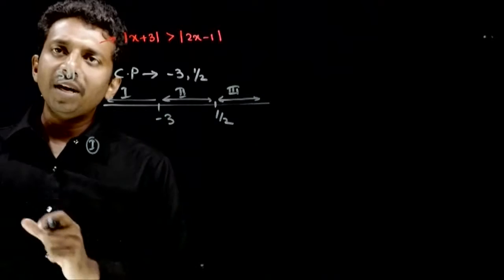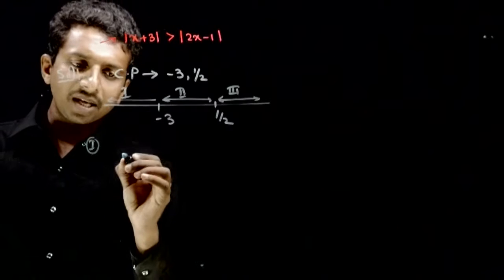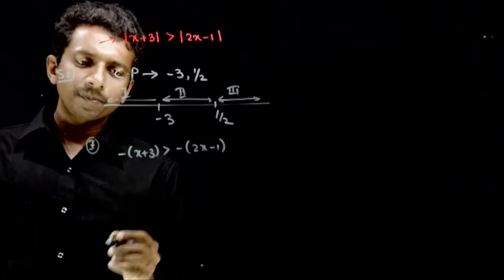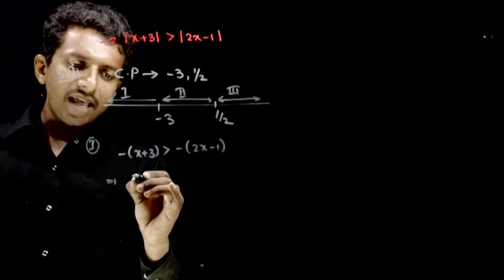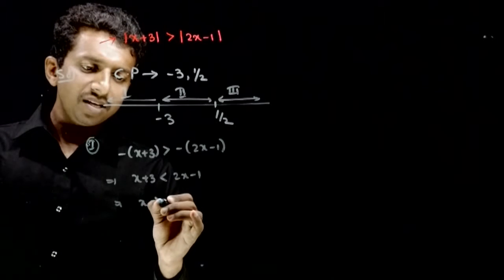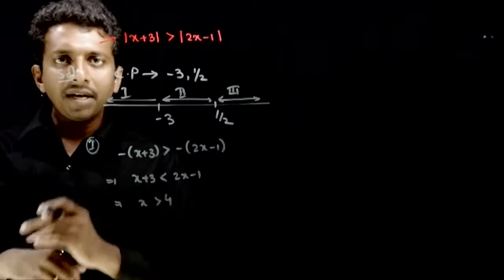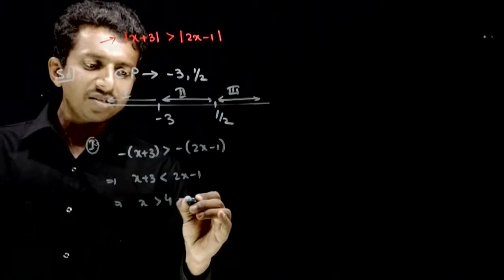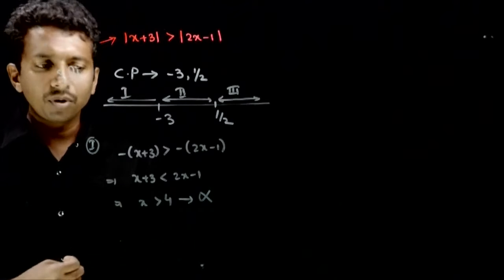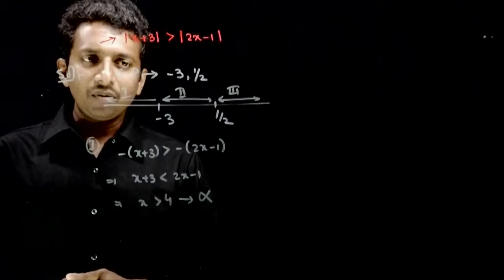In the 1st part, x is less than minus 3. Both expressions are negative here, so the inequality becomes: minus of (x plus 3) is greater than minus of (2x minus 1), which implies x plus 3 is less than 2x minus 1, which implies x is greater than 4. But we are solving in the interval x less than minus 3, and the answer x greater than 4 is not valid here. So this inequality has no solution in this interval.